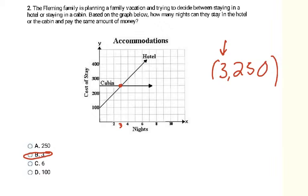Since the question asks how many nights, and nights is on the x-axis, the answer is 3 — letter B. Make sure when answering word problems that you look at the correct axis they're asking for, because the 250 was there to try to trip you up — that was the cost of the stay for three nights in either place.